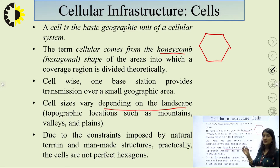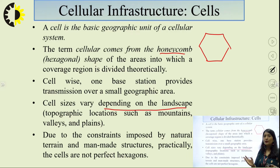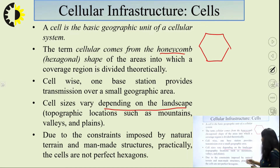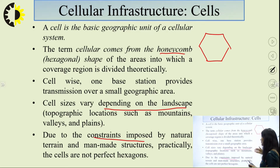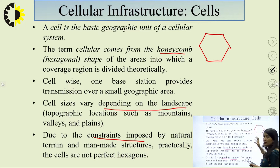Cell size varies depending on the type of area — whether service is provided in urban, rural, or suburban areas, and whether on land, hills, or mountains. There are many constraints imposed by natural terrain and manmade structures, which is why we use a hexagonal structure with varying cell sizes.